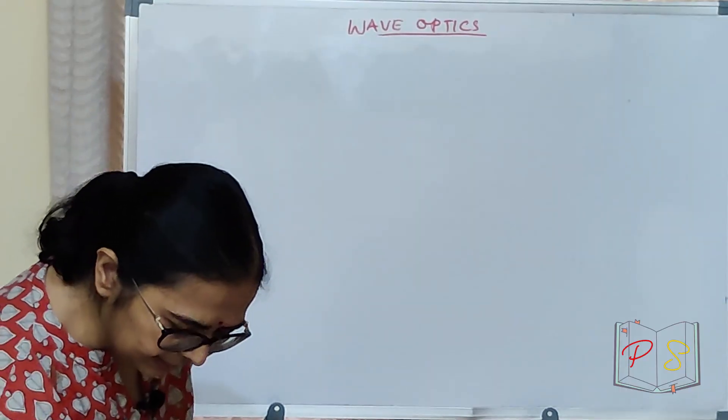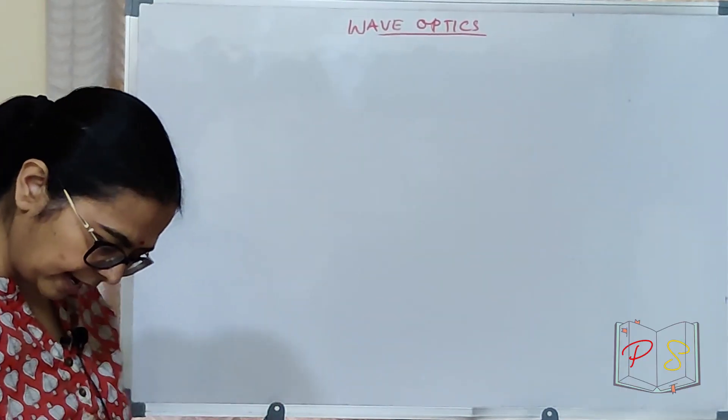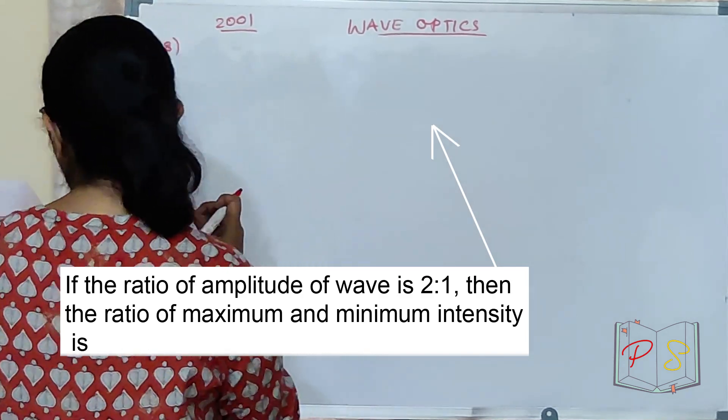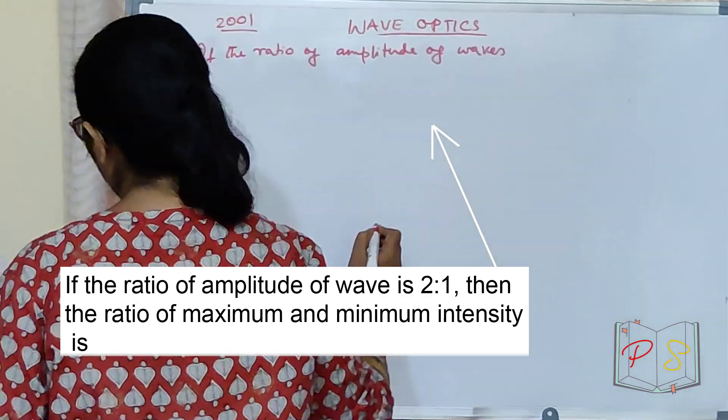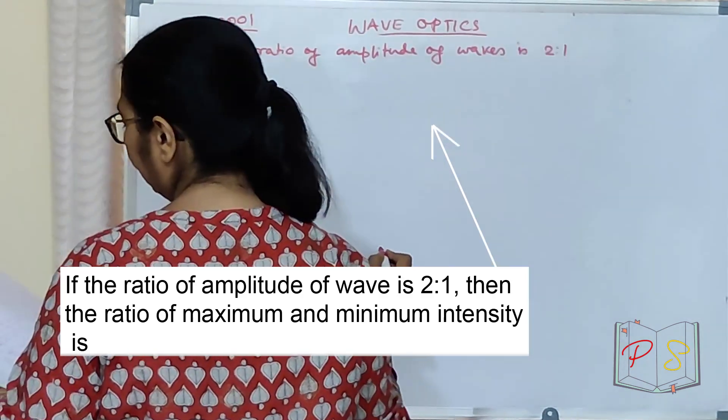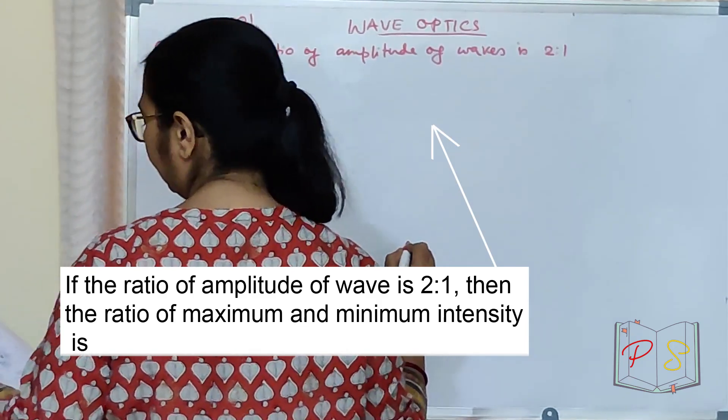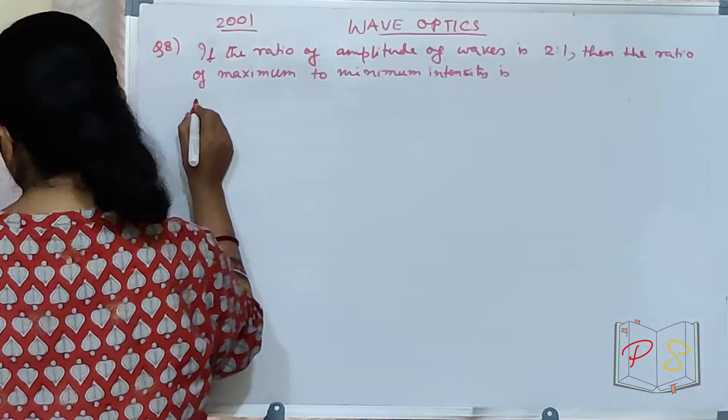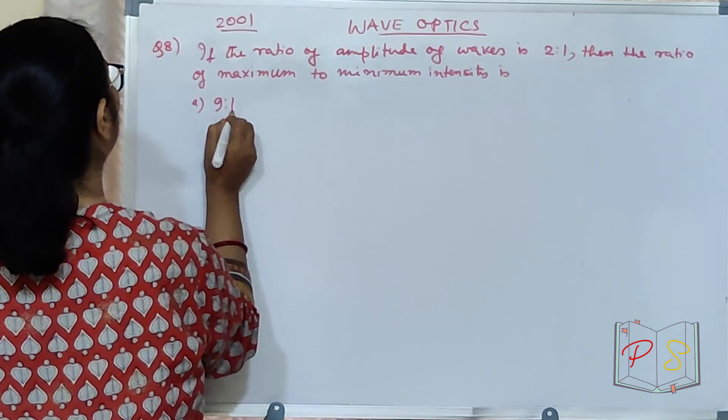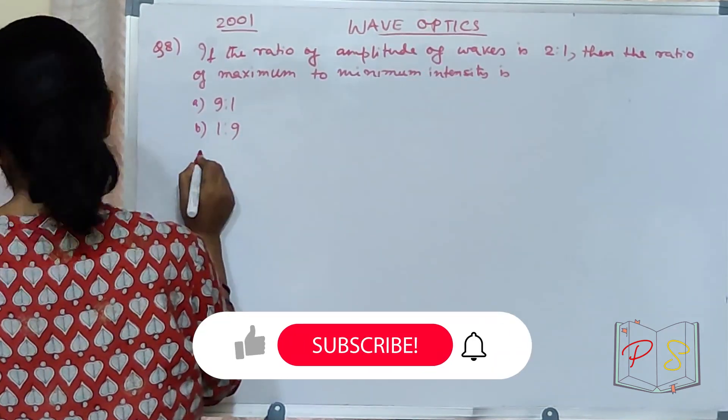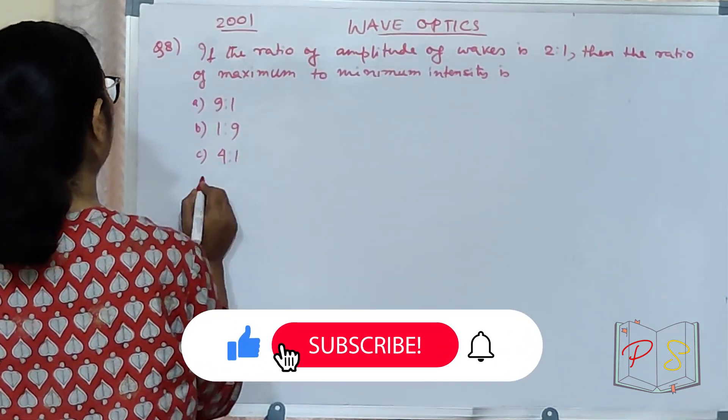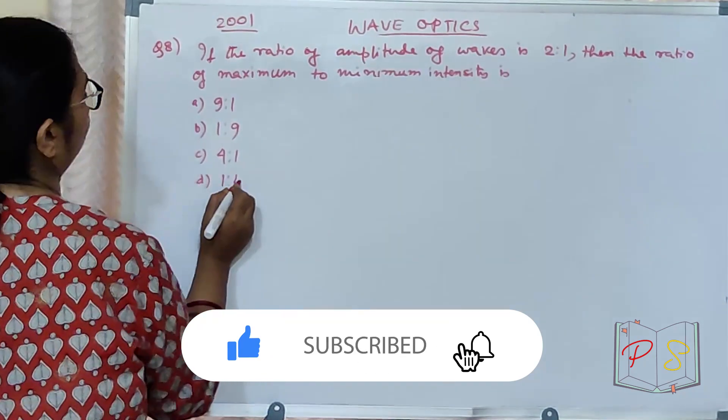In 2008, my question number 8. If the ratio of amplitude of wave is 2 is to 1, then the ratio of maximum and minimum intensity is. What are your options? Option A is 9 is to 1, B option is 1 is to 9, C is 4 is to 1, and D is 1 is to 4.